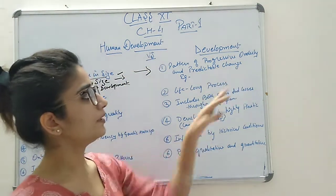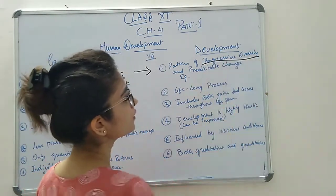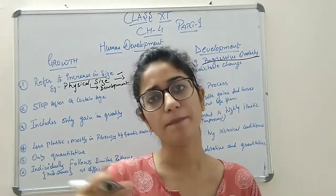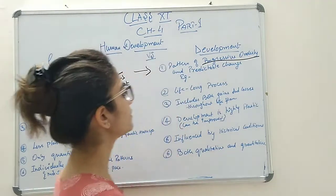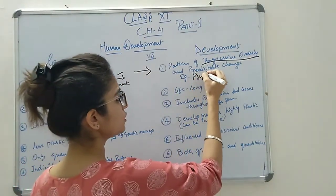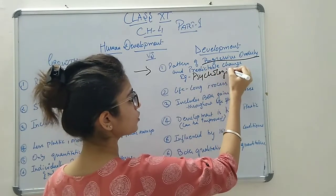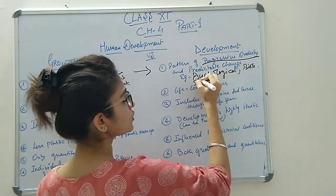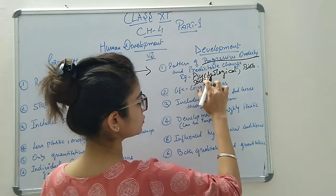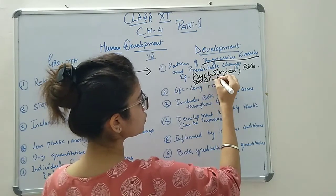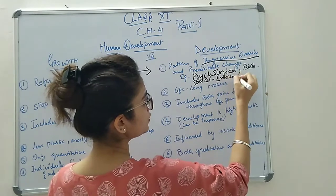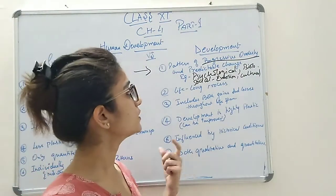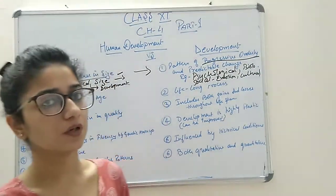On the other hand, development is a progressive, orderly, and predictable change in which patterns keep changing, and development takes place across all perspectives — whether psychological, biological, social, emotional, or cultural. All these are the patterns of development which take place during the progressive developmental period.